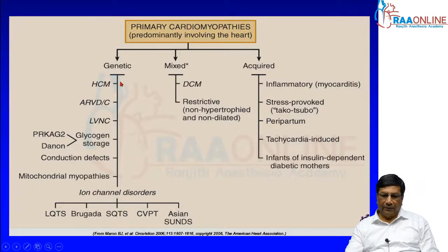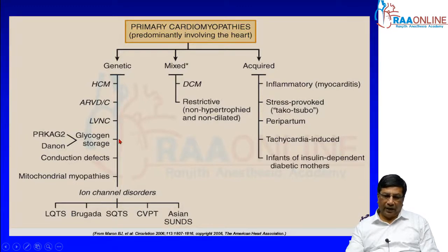Genetic cardiomyopathies include hypertrophic cardiomyopathy, arrhythmogenic RV dysplasia, left ventricular non-compaction, very rare glycogen storage disorders, and some conduction defects and mitochondrial myopathies.